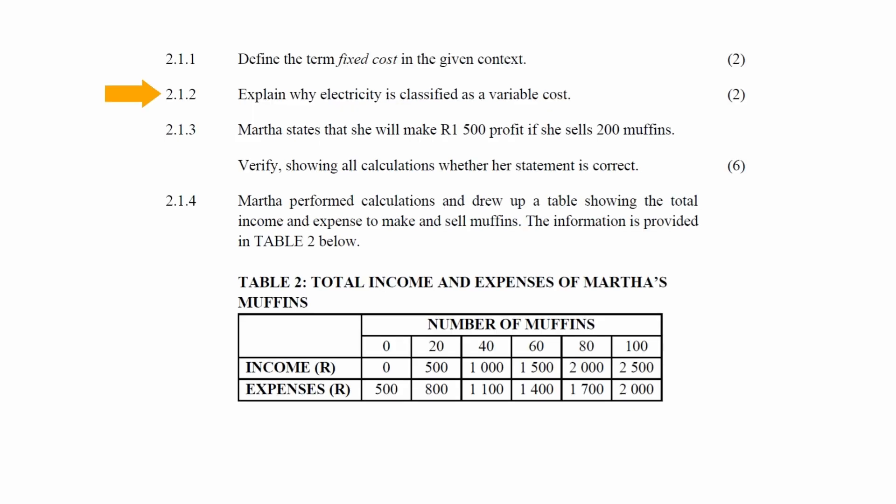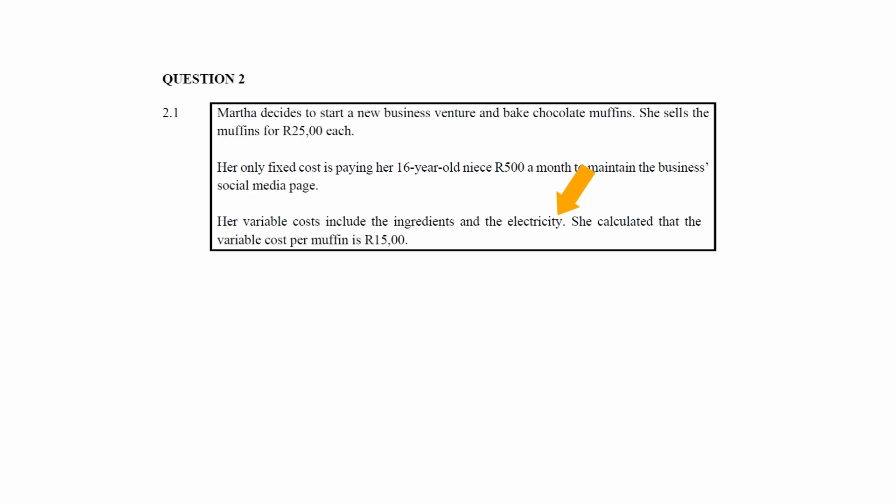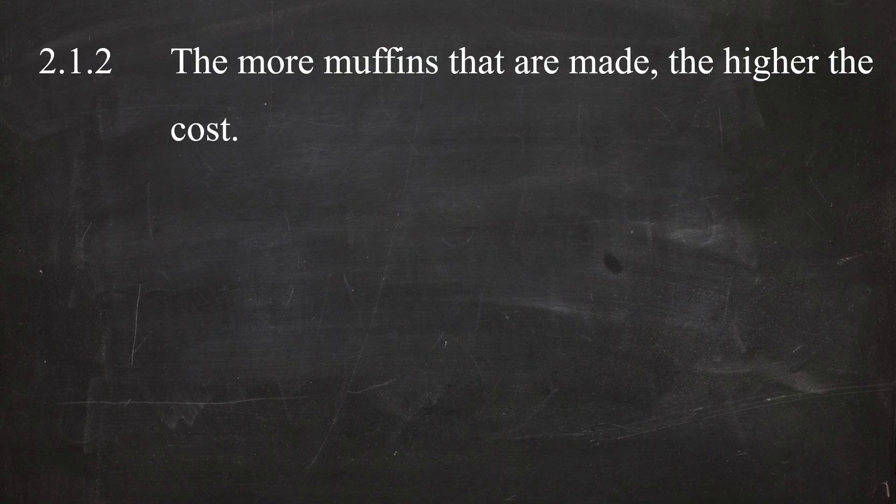In Question 2.1.2, you have to explain why electricity is classified as a variable cost. The variable cost can be defined as the cost that will change depending on how many muffins are produced. So the more muffins that are produced, the higher the variable cost will be.